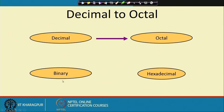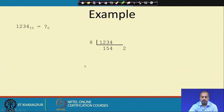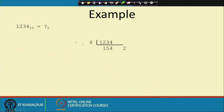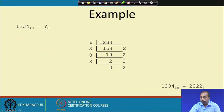For decimal to octal conversion, just as we divided by 2 for decimal to binary, we divide by 8 and keep track of the remainder. For example, 1234 base 10 divided by 8 repeatedly: remainders are 2, 2, 3, 2. Writing from last to first gives 2322 base 8. This is how we convert between number systems — by dividing by the base and keeping track of the remainders.